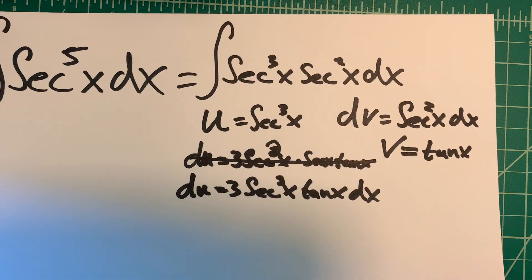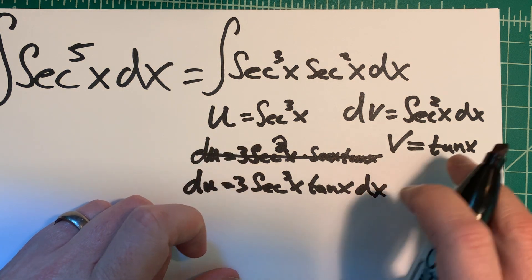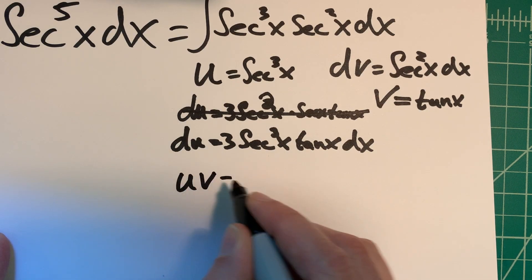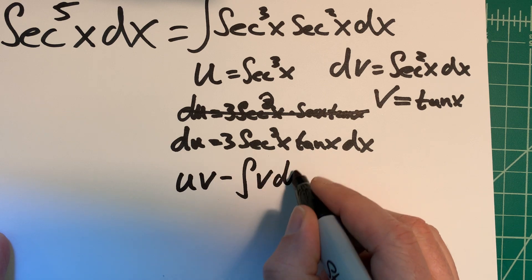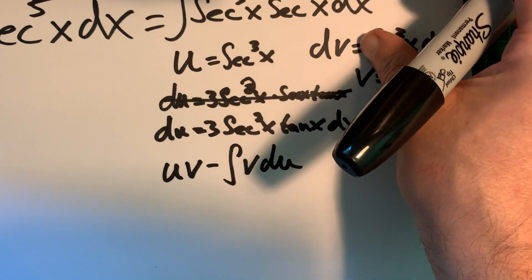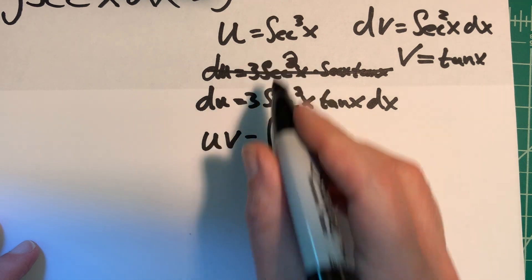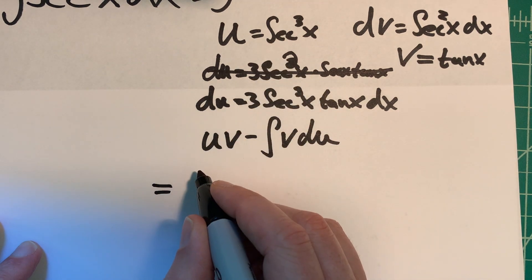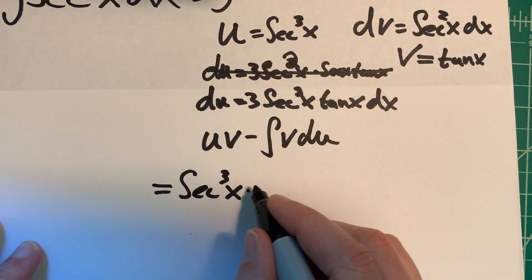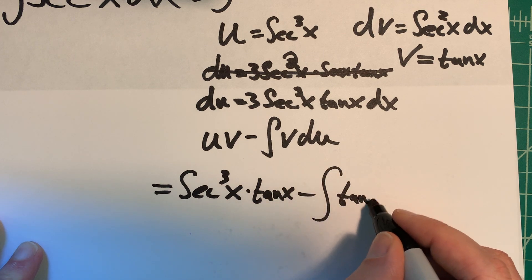So we're getting somewhere now. Now we have u and v, we have v and du, so we can do our by-parts. So u v minus the integral of v du. We can now build this and make an attempt at solving this. So what are we going to do? Our u in this case is secant cubed x. And what was our v? Tangent x.